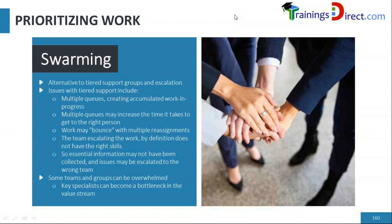Swarming is an alternative to tiered support. It's not about level one, level two, and level three support teams with escalation from one level to another — it's an alternative to that model. Tiered support typically has several issues.